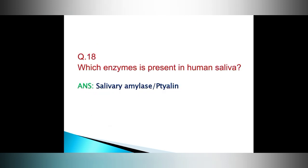Question number 18. Which enzyme is present in human saliva? Answer. Salivary amylase, also known as ptyalin.